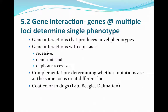This section is broken out by first talking about gene interactions that produce novel or new phenotypes. Then we'll talk in the next segment about gene interactions with respect to epistasis. Epistatic interactions can actually come in multiple forms — it can be recessive, dominant, or duplicative recessive forms. Then we'll talk briefly about complementation.